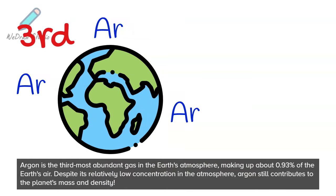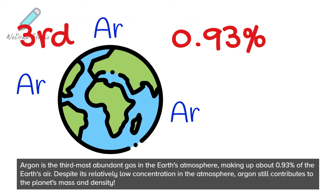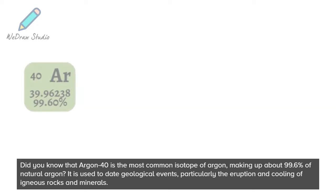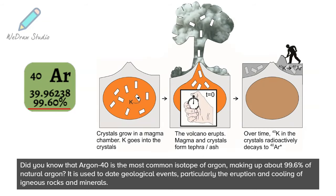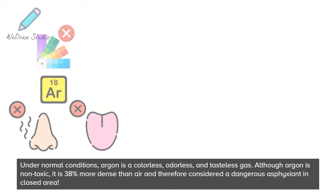Argon is the third most abundant gas in the Earth's atmosphere, making up about 0.93% of the Earth's air. Despite its relatively low concentration, argon still contributes to the planet's mass and density. Argon-40 is the most common isotope, making up about 99.6% of natural argon, and is used to date geological events, particularly the eruption and cooling of igneous rocks and minerals.